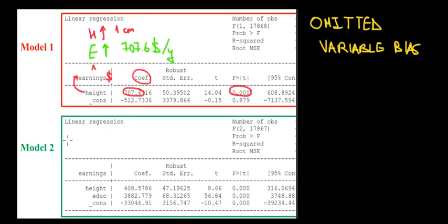We add one more variable because we thought that maybe this single variable isn't enough to make an accurate prediction. So we regress earnings based on height as we did before, but now we include the effect of education as well.